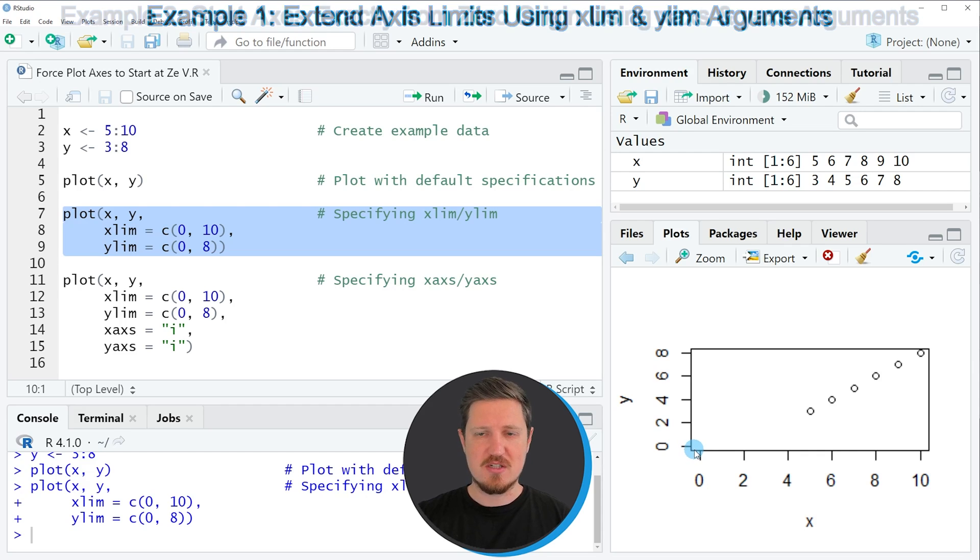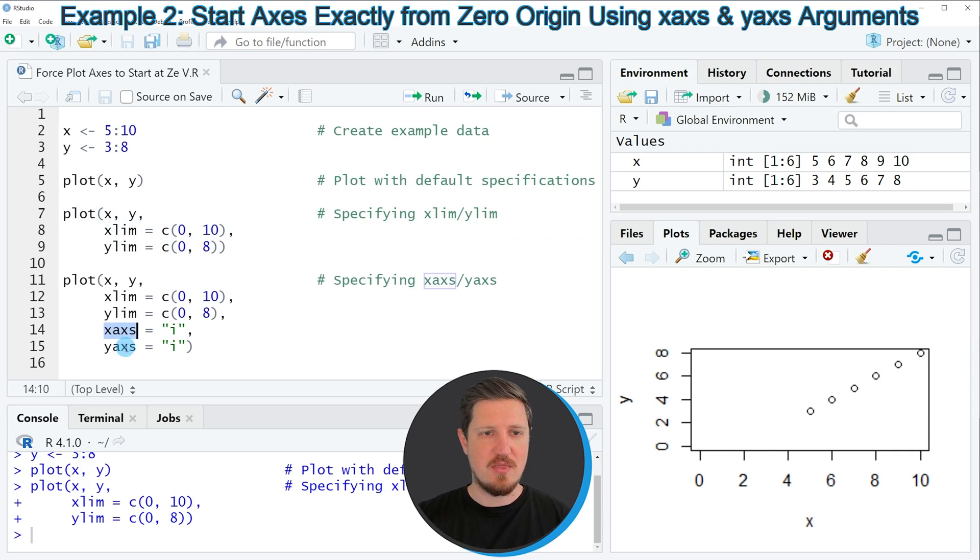So if we want to remove this corner as well we can apply the xaxs and the yaxs arguments within the plot function as you can see in the next example starting in line 11.